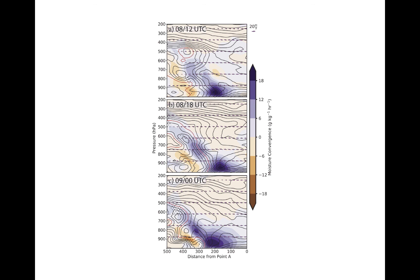Moisture convergence was enhanced all along this tilted boundary beneath 500 millibars, with the greatest convergence occurring at low levels just ahead of the developing surface front, at the location where the primary rain band was responsible for the largest precipitation amounts.